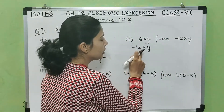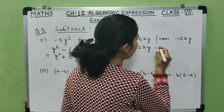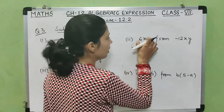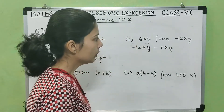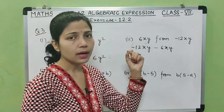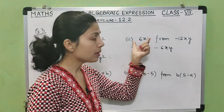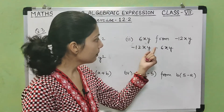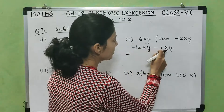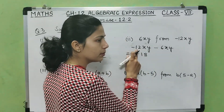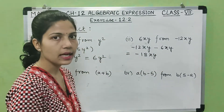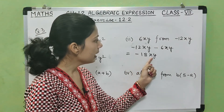We write minus 12xy as the first term. Since 6xy is positive, there is no need to put it in brackets — so minus 6xy. Both are like terms and both are negative, so they add: 12 plus 6 is 18. The sign goes with the greater number, which is 12, so the answer is minus 18xy.